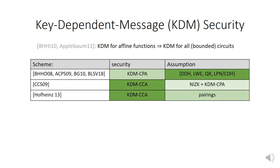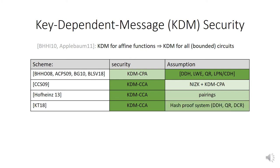Haifeng Qin built directly from pairings a KDM-CCA secure encryption scheme, which is simpler and more efficient. But pairings is a qualitatively stronger assumption than what is needed for KDM-CPA public key encryption. Kitagawa and Tanaka in 2018 showed that any IND-CCA encryption relying on hash proof systems — buildable from DDH, QR, or Decisional Composite Residuosity — can be upgraded to KDM-CCA.